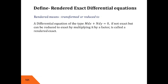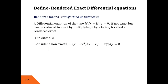A rendered exact differential equation is one where the differential equation of the type M dx plus N dy equal to 0 is not exact, but can be reduced or transformed to an exact differential equation by multiplying it by some factor. For example, consider the non-exact differential equation (y minus 2x³) dx minus x(1 minus xy) dy = 0. You can verify this by checking that ∂M/∂y is not equal to ∂N/∂x.